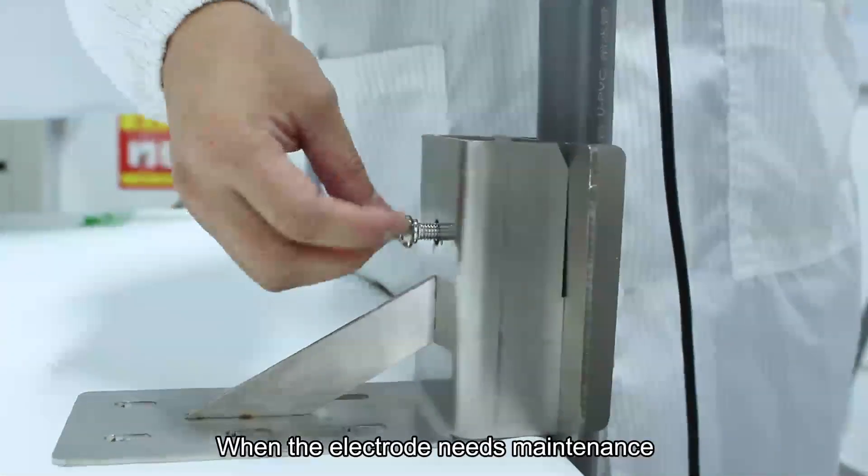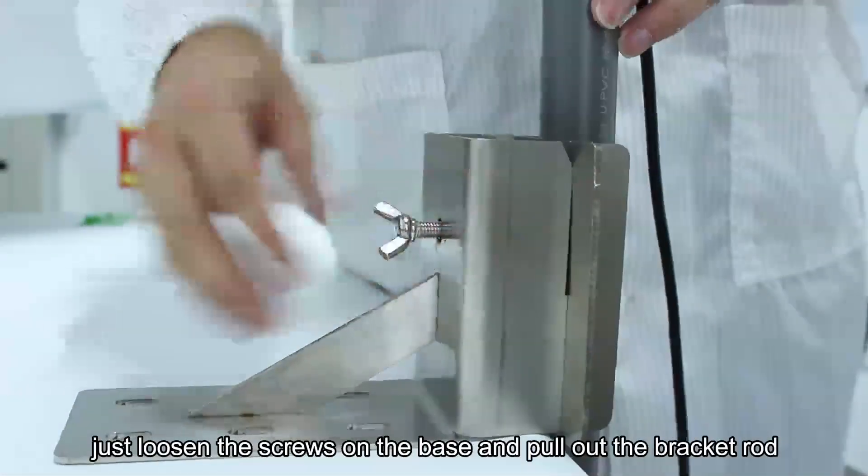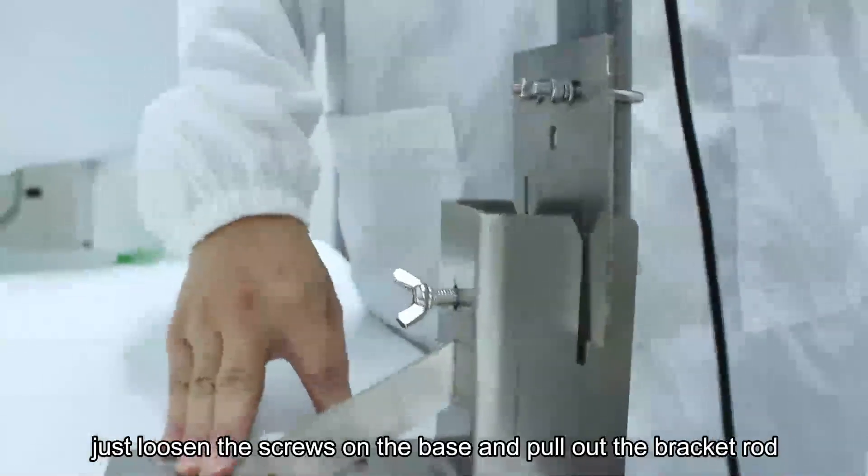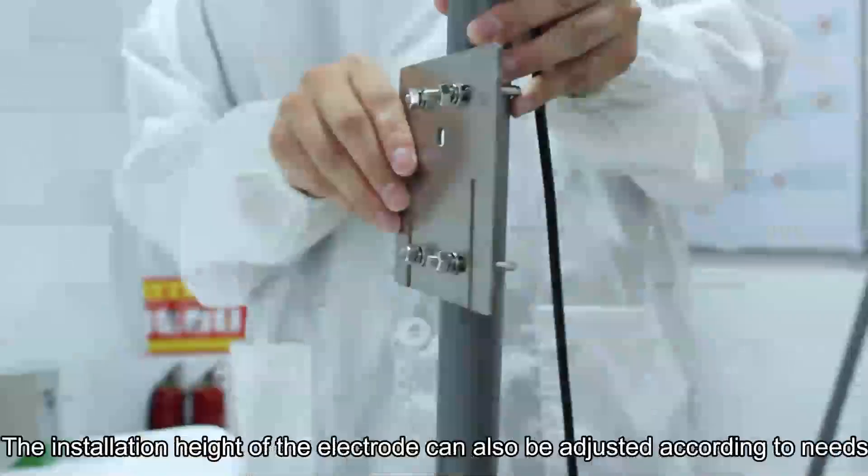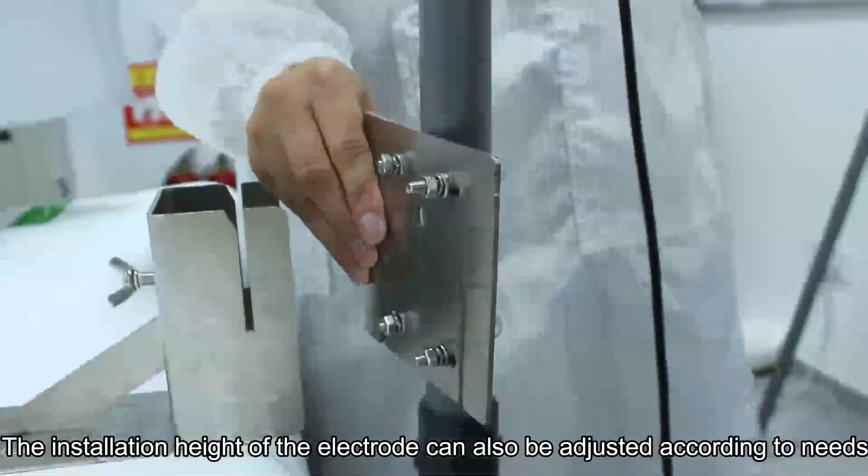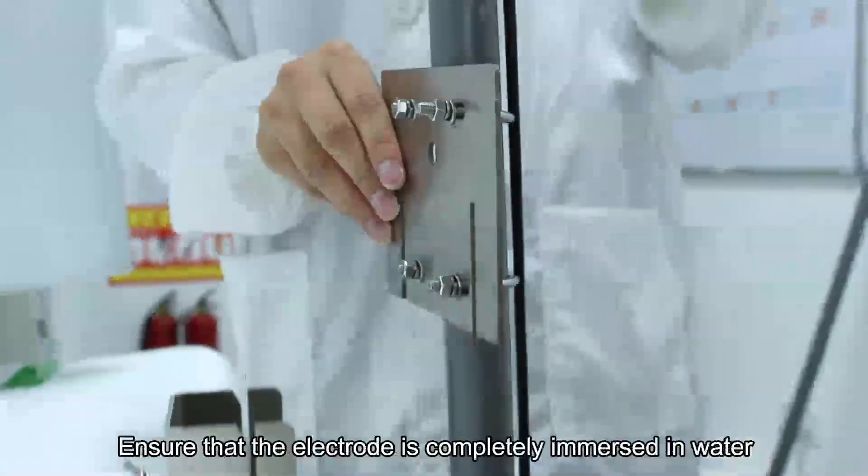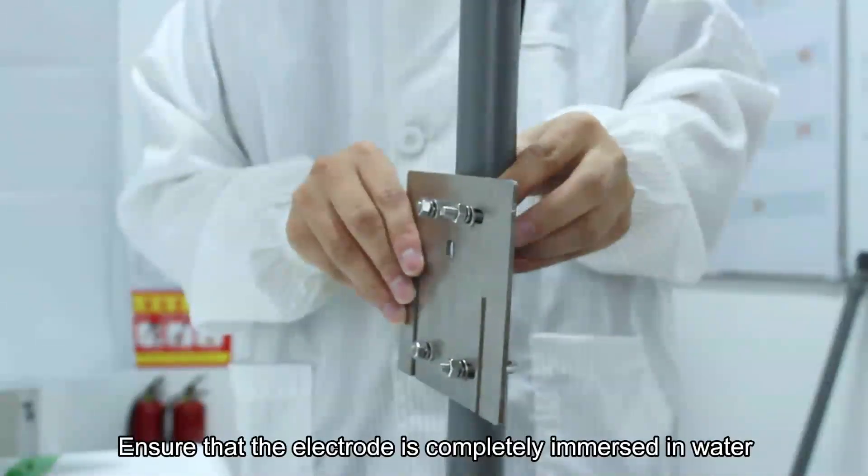When the electrode needs maintenance, just loosen the screws on the base and pull out the bracket rod. The installation height of the electrode can also be adjusted according to needs. Ensure that the electrode is completely immersed in water.